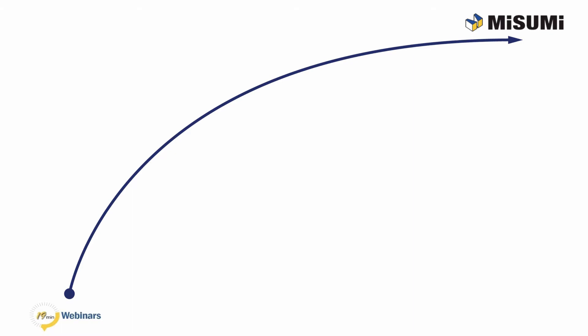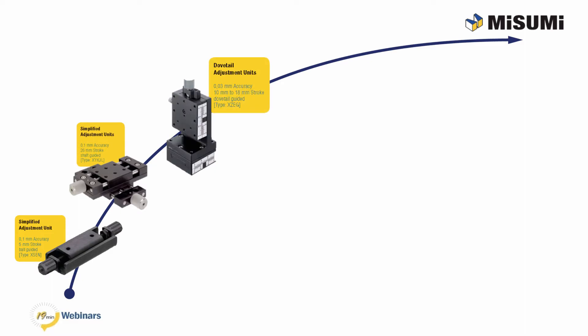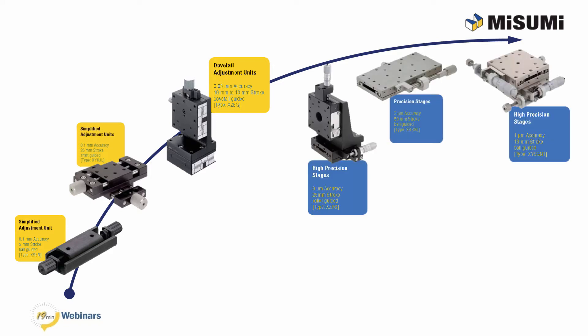Let's take a look at how our stages are laid out. We will first start with our simplified stages — these basic stages have an accuracy of 0.1 millimeters. Next would be our standard stages, which utilize a dovetail linear guide and have an accuracy of 0.03 millimeters or 30 microns. Our final group would be the high precision stages, which have an accuracy from 3 microns up to 1 micron and utilize a cross roller bearing guide or a linear ball guide.